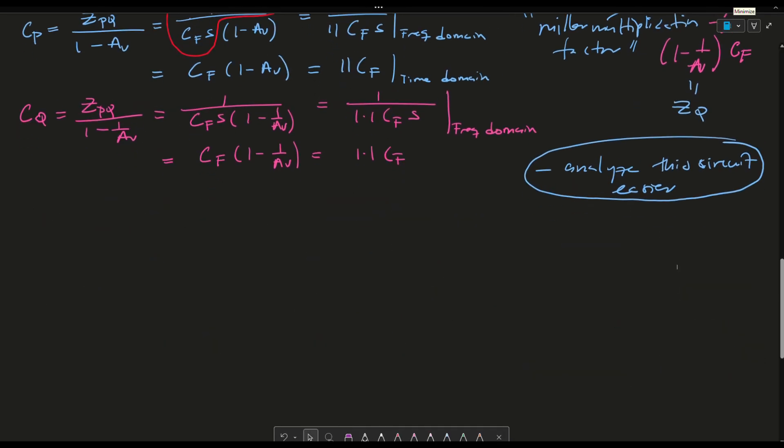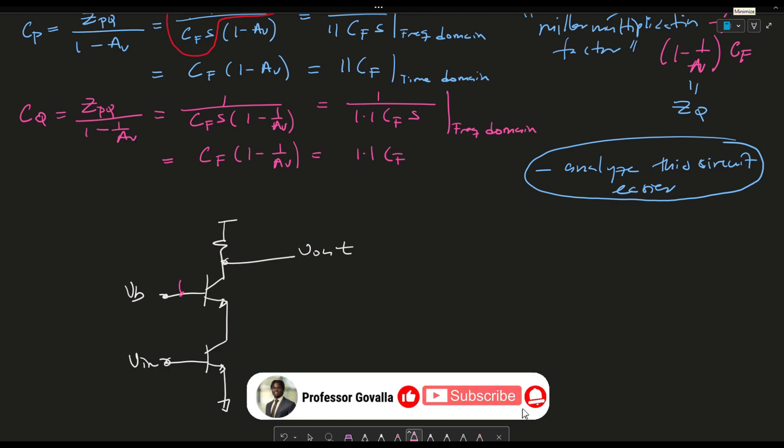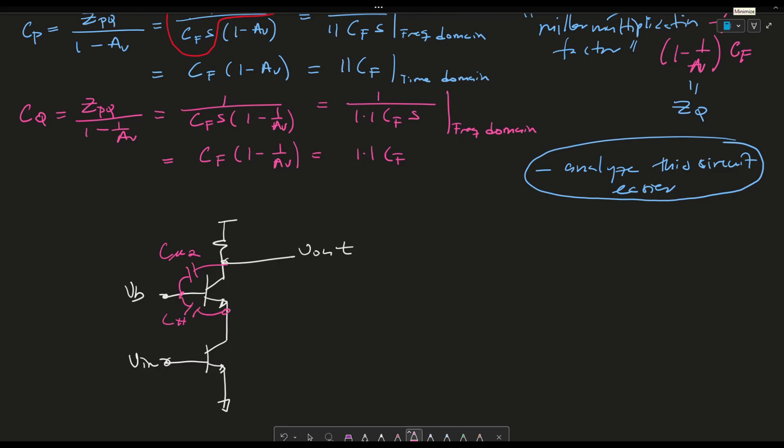A nice example or a nice situation where Miller's effect comes into play is if you have a Cascode amplifier, in this case I have a BJT where this is VIN, this is VB, and this is VOUT. You're going to have parasitic capacitances located here. This is C mu 2, this is C pi 2, this is C mu 1, this is C pi 1, this here is C CS 1, and this here is C CS 2.